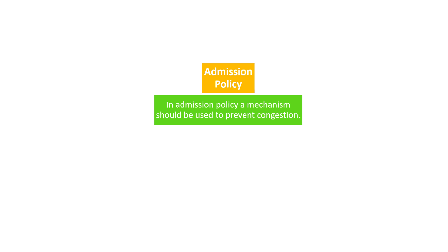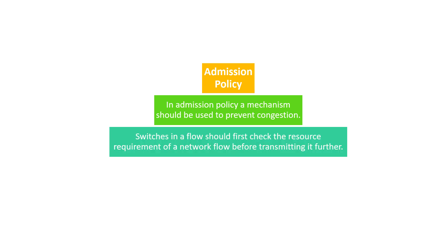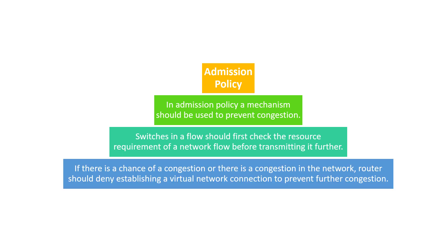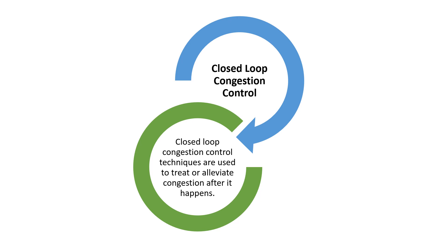The next policy is the admission policy. In this policy, a mechanism is used to prevent congestion where switches in a flow first check the resource requirements of a network flow before transmitting it further. If there is a chance of congestion or there is already congestion in the network, the router should deny establishing a virtual network connection to prevent further congestion. This is how the admission policy works.